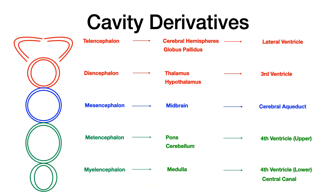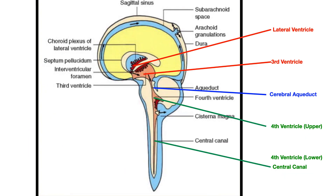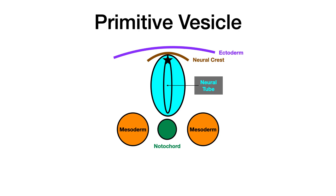CSF flows: lateral ventricle to third ventricle to cerebral aqueduct to fourth ventricle to central canal. Top to bottom: telencephalon, then diencephalon, mesencephalon, metencephalon, myelencephalon. The takeaway is that you can either memorize it, learn a mnemonic from the other video, or if you know neuroanatomy, just work top to bottom and it should all make sense. The top part of the neural tube gave rise to primary vesicles, those gave rise to secondary vesicles, those gave rise to neural derivatives, and those gave rise to cavities.